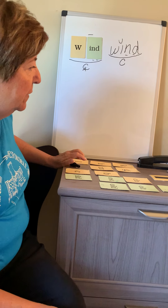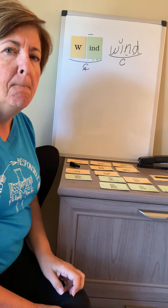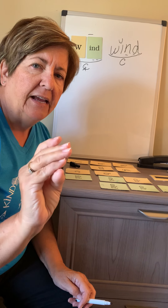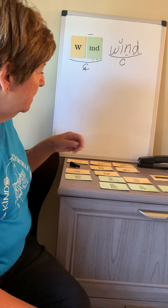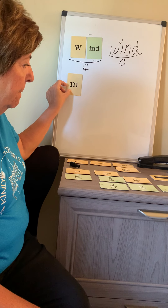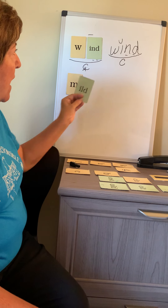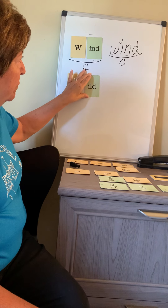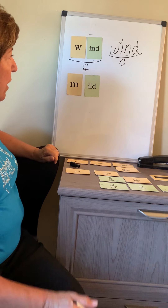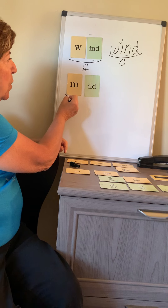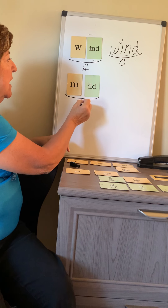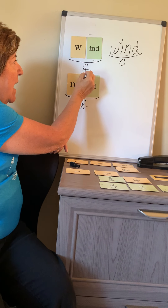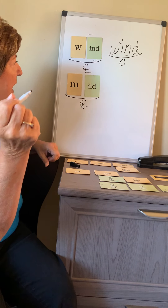Let's build another one. How about we build the word MILD. Tap it with me: M-ILD. Okay, M-ILD. So how do we mark it? It is one syllable. It is a closed exception because the I is long and strong.